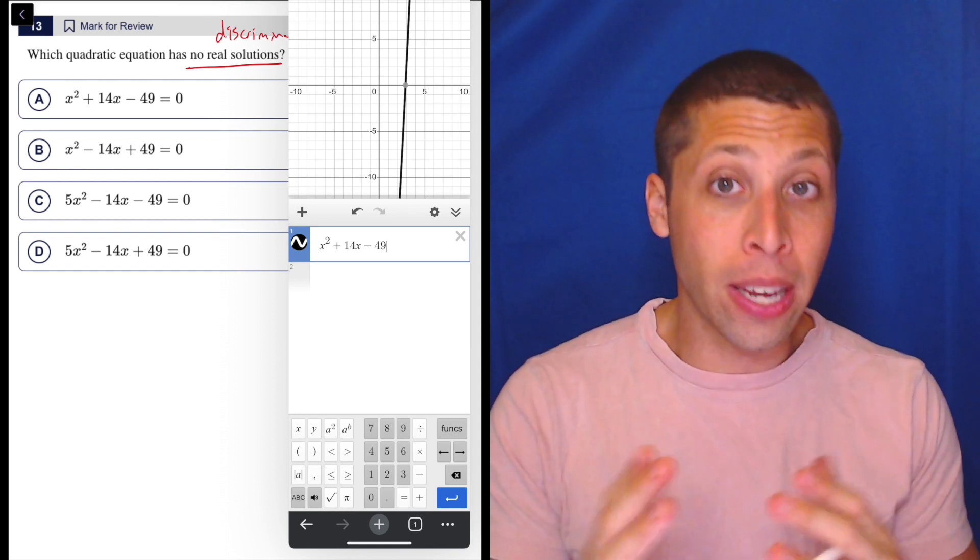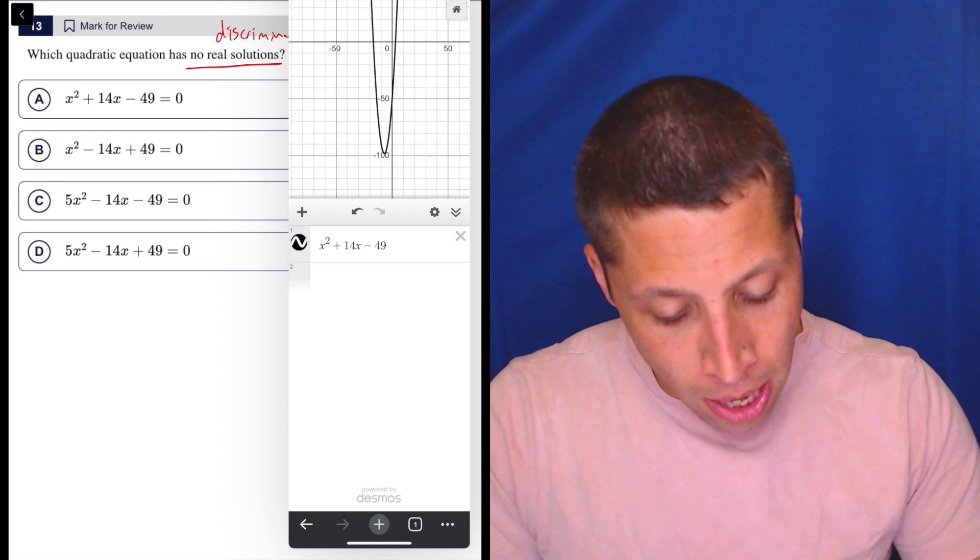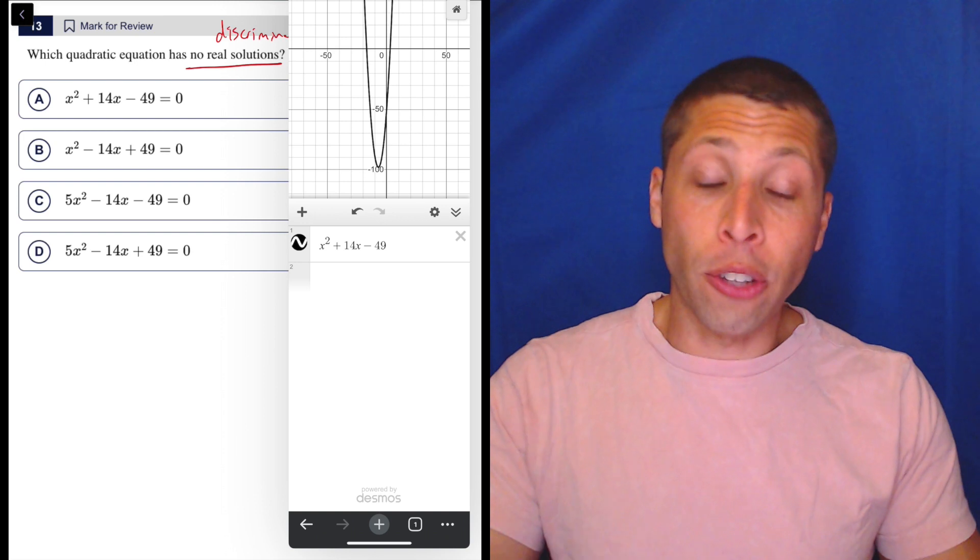And basically now what Desmos is doing is it's treating it like a y. So when it graphs it, it's not graphing the solutions, it's graphing the parabola. So if I zoom out here, we can see it, and we can see that it also has solutions.